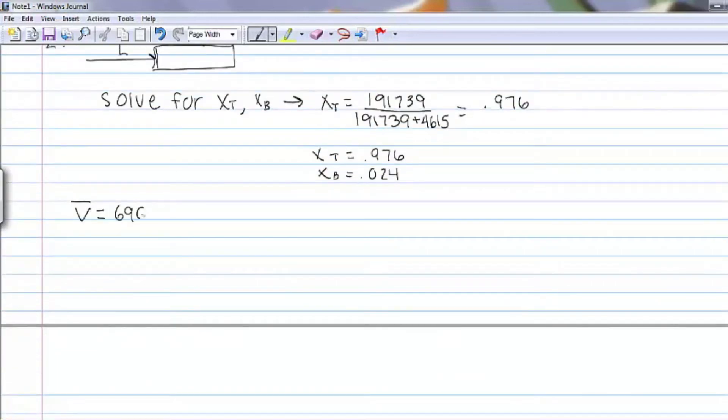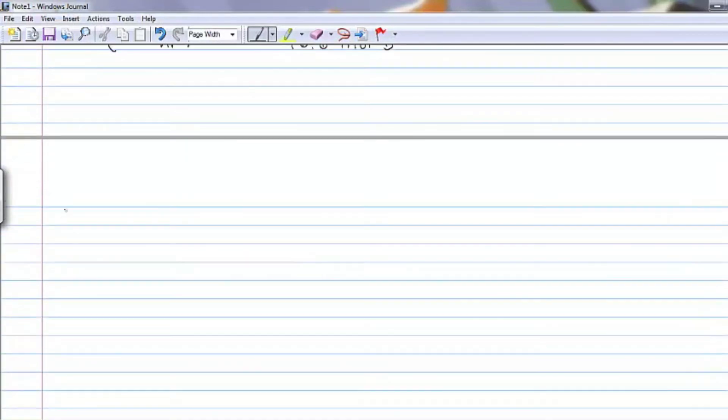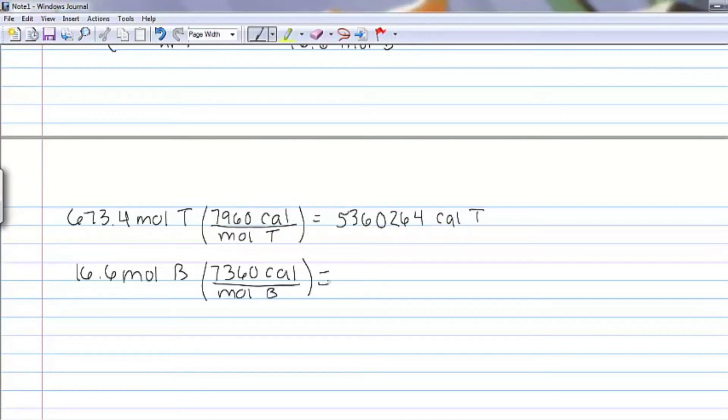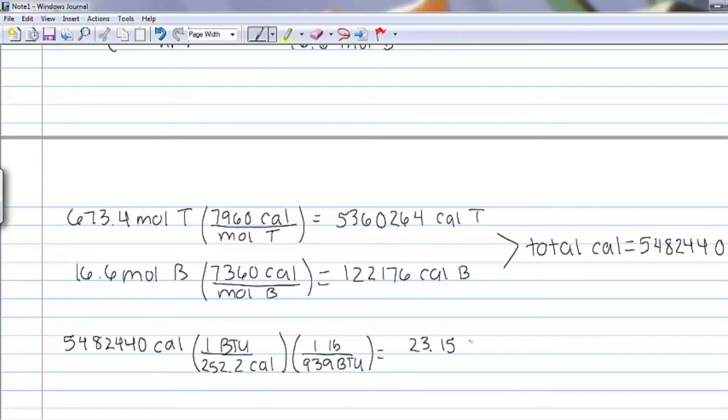Now we multiply the mole fractions by V bar to determine the number of moles of each of toluene and benzene that are coming out of the vapor stream. Now we can multiply by the heat of vaporization to determine the energy in calories required to vaporize the chemicals. This total number of calories should be converted to pounds of steam using the information provided in the problem statement.